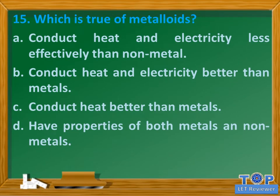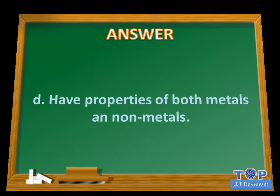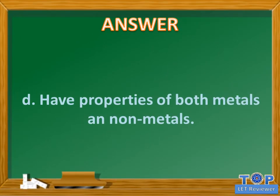Question number 15. Which is true of metalloids? A. Conduct heat and electricity less effectively than non-metal. B. Conduct heat and electricity better than metals. C. Conduct heat better than metals. D. Have properties of both metals and non-metals. Answer: D. Have properties of both metals and non-metals.